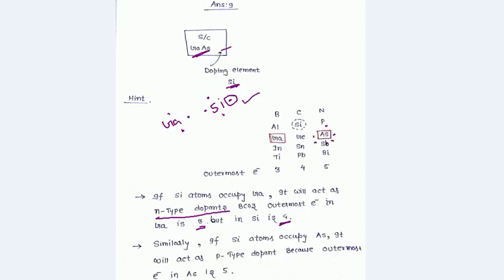For silicon, the outermost electron is four, so there is a need to combine one further element. That means this silicon which acts as an n-type dopant.